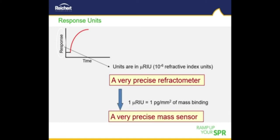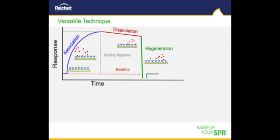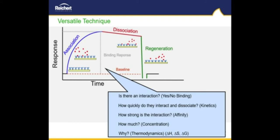Basically, SPR is a very precise mass sensor. SPR can tell us many things about how two molecules bind or interact with one another. Simple tests can quickly determine whether or not there is binding and rank the relative binding level of many compounds for a screening application. More complex experiments are able to characterize kinetics, rate constants, or on and off rates. Data from experiments where responses reach a steady state is used to calculate the affinity constant. SPR can also be used to determine the concentration of biologically active molecules in solution and calculate thermodynamic binding parameters to reveal the mechanism of the interaction.